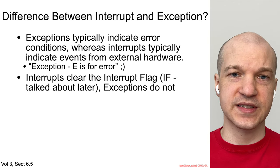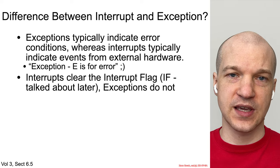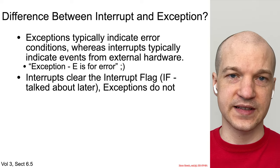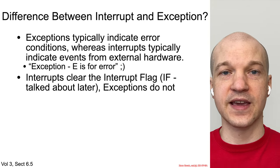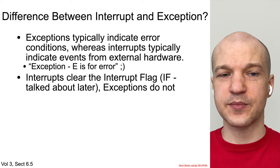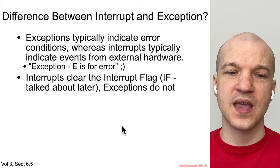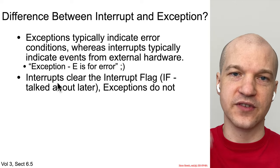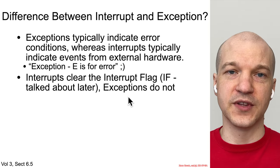What is the difference between an interrupt and exception if they're both conditions that require interrupting whatever you're doing and jumping off somewhere to handle it? Generally speaking, exceptions typically indicate some sort of error condition, whereas interrupts are more often than not caused by external hardware — like someone pressed a key on a keyboard or someone sent a packet to the network card. You can think: E for exceptions, E for errors. Also, we'll learn later about the interrupt flag — interrupts clear the interrupt flag so you don't have recursive interrupts interrupting each other, but exceptions don't.